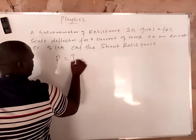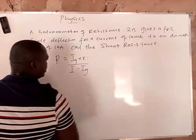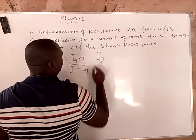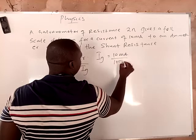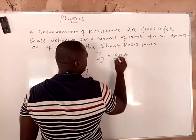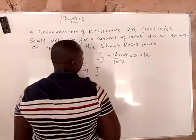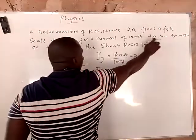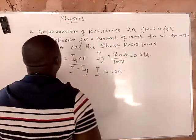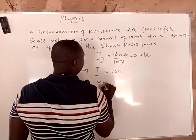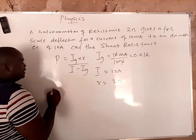Using the formula: R equals IG times r, all over I minus IG. The galvanometer current IG is 10 milliamperes — divide by 1000 to convert to amperes, giving 0.01 amperes. The ammeter current I is 10 amperes, so no conversion needed. The resistance of the galvanometer r is 2 ohms.